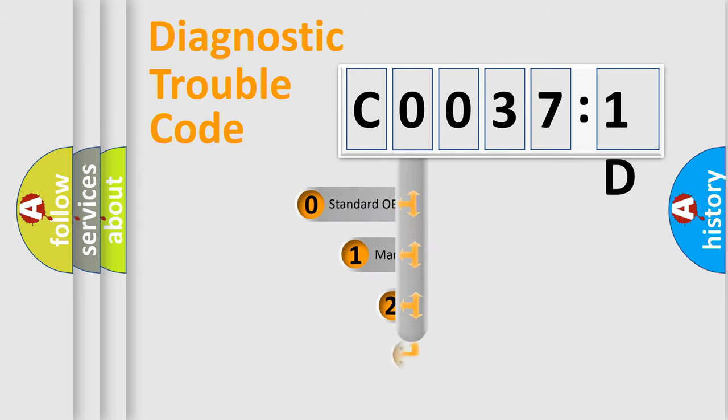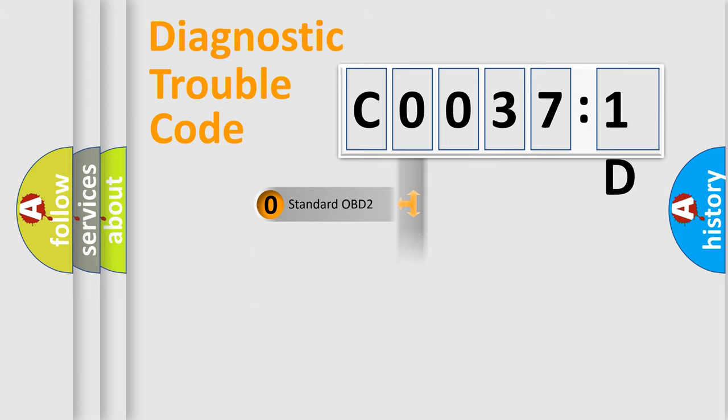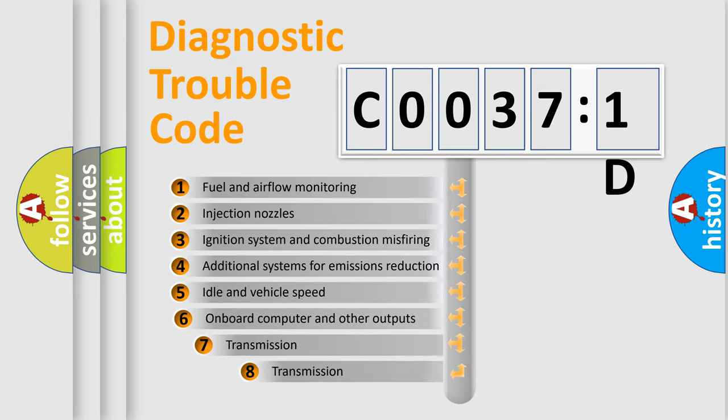This distribution is defined in the first character code. If the second character is expressed as zero, it is a standardized error. In the case of numbers 1, 2, or 3, it is a manufacturer-specific expression of the car-specific error.